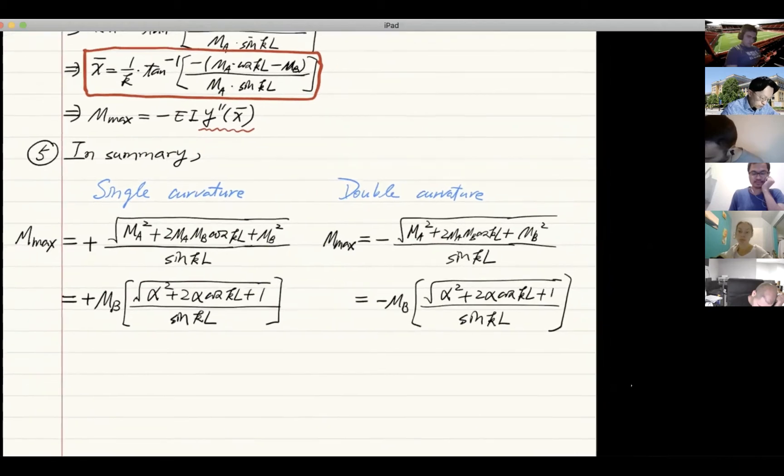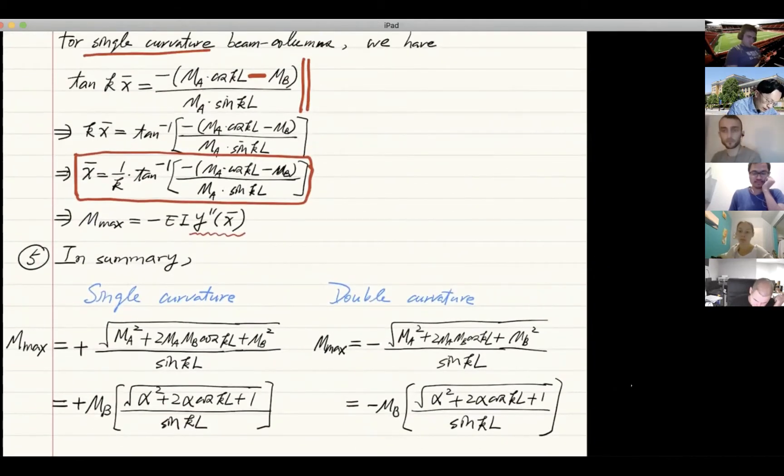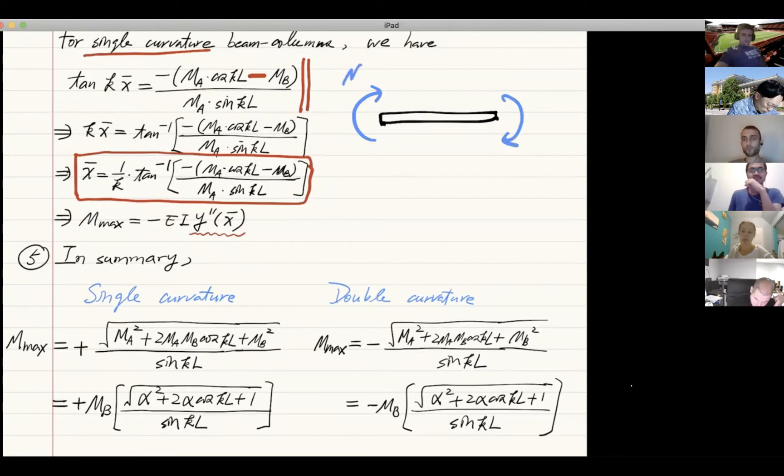Now be careful with the definition of what we call the positive sign or negative sign. If we define this way, the sign of MB is considered positive or negative. When you draw the moment diagram, remember the positive one always goes on top—that's for MA.